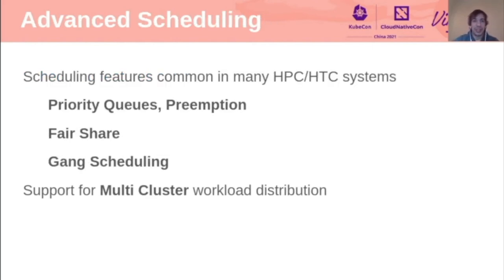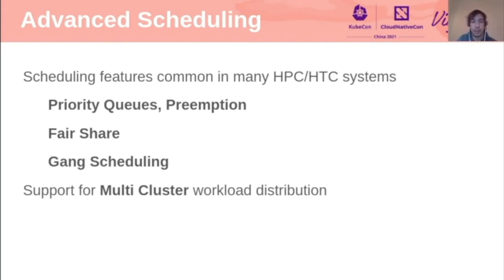Finally, the third challenge is advanced scheduling, which is really the key difference compared to traditional IT deployments. These are features required for traditional HPC or high-throughput computing type of workloads. I'll mention priority queues: the idea that as you want to maximize the usage of the clusters, you allow workloads to be queued before being submitted, and these queues have priorities for higher and lower priority workloads. This also means there is a requirement for preempting running workloads to replace them with higher priority ones, since these workloads can take a few hours or even a few days. This is something not existing in the built-in schedulers, but there are multiple projects focusing on this.